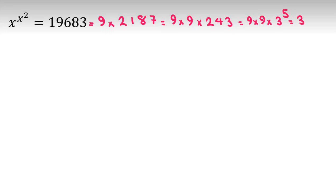So 3 squared times 3 squared times 3 to the 5th equals 3 to the 9th.